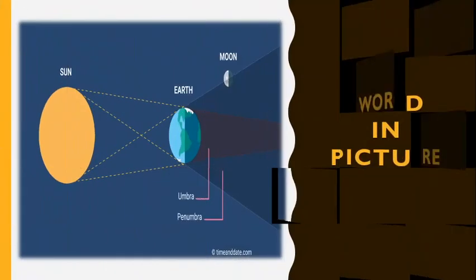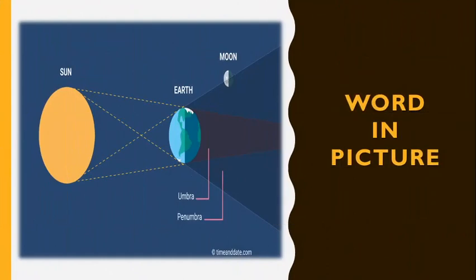Let us now take a look at this picture. This picture not only shows us umbra as the darkest part of the shadow, but also penumbra, which is the lighter part of any shadow.